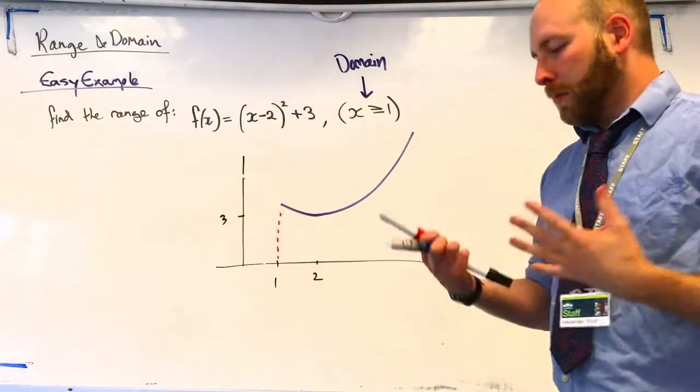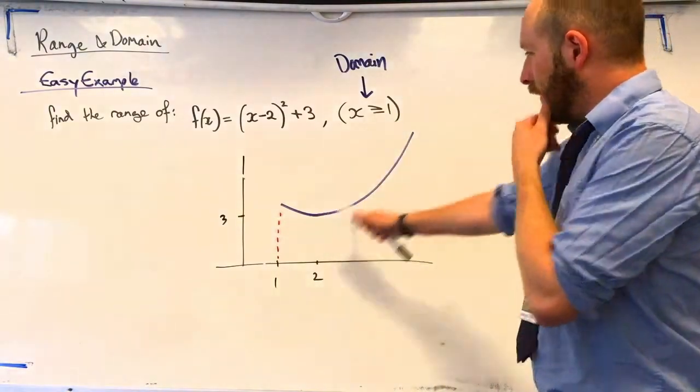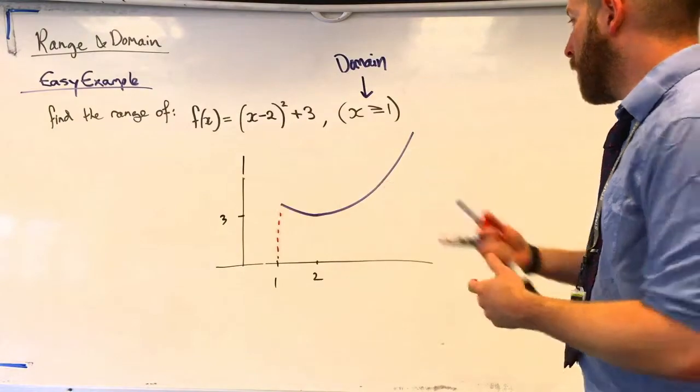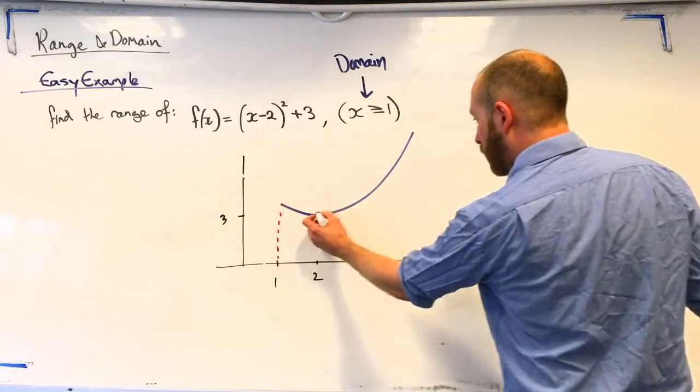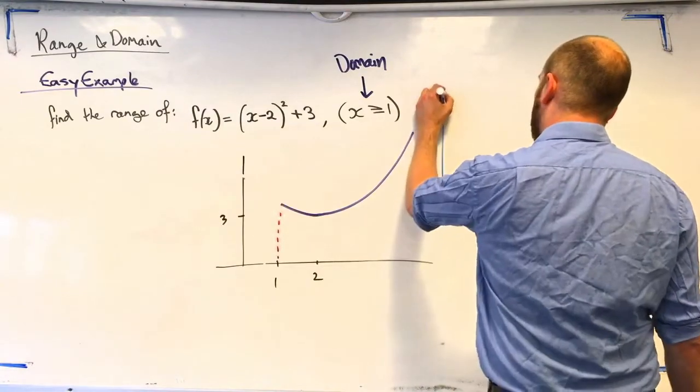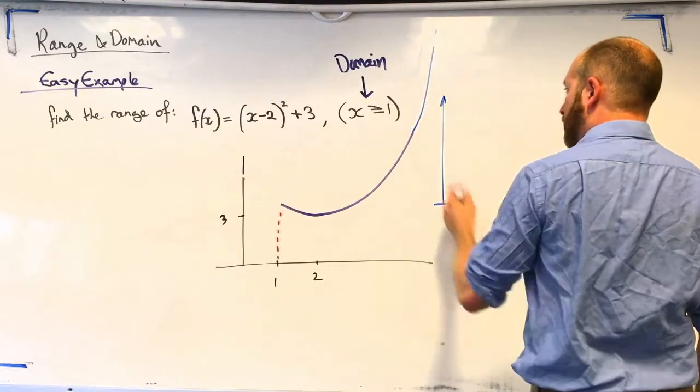Alright, so our range is going to be the y values that we are allowed, well, the y values that are described by my sketch now. So, you can see our lowest y value is here. And the quadratic is going to go on and on to infinity.